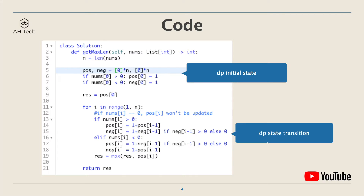Next is the DP state transition equation. We iterate through the array. If the element is greater than zero, then positive[i] = 1 + positive[i-1], and negative[i] = 1 + negative[i-1] if negative[i-1] > 0, otherwise reset to zero. If the element is negative, then positive[i] = 1 + negative[i-1] if negative[i-1] > 0, otherwise reset to zero, and negative[i] = 1 + positive[i-1]. Finally, we update result to the maximum of result and positive[i].